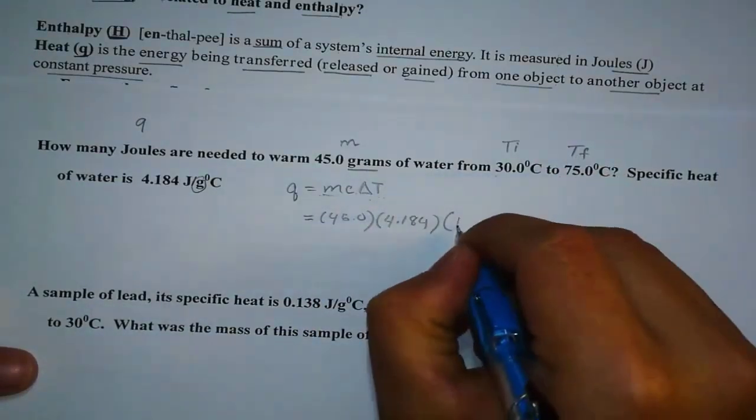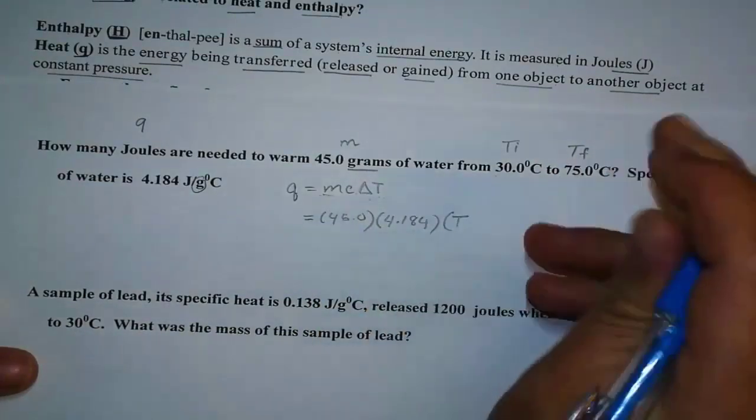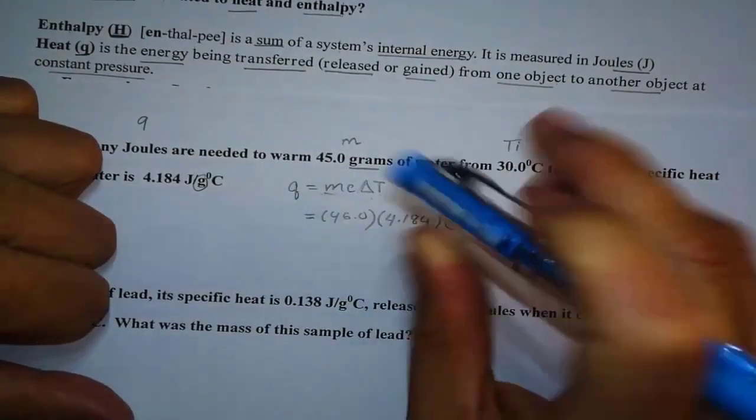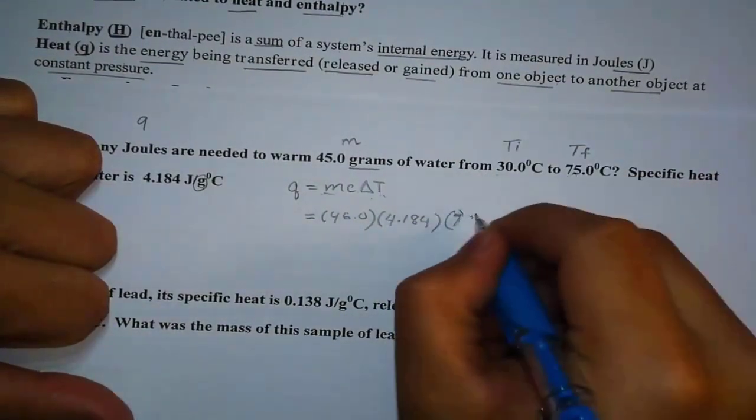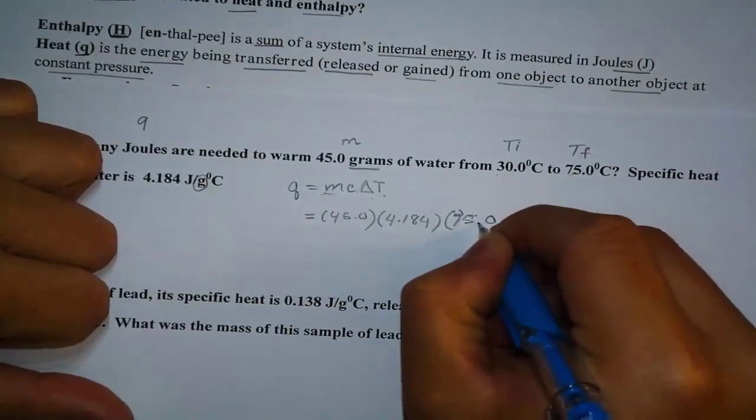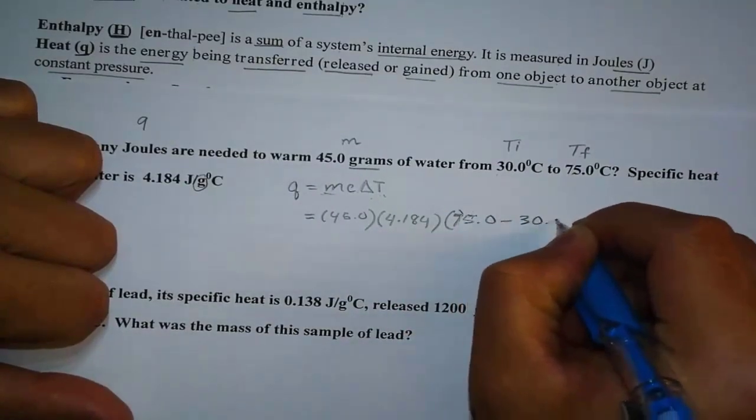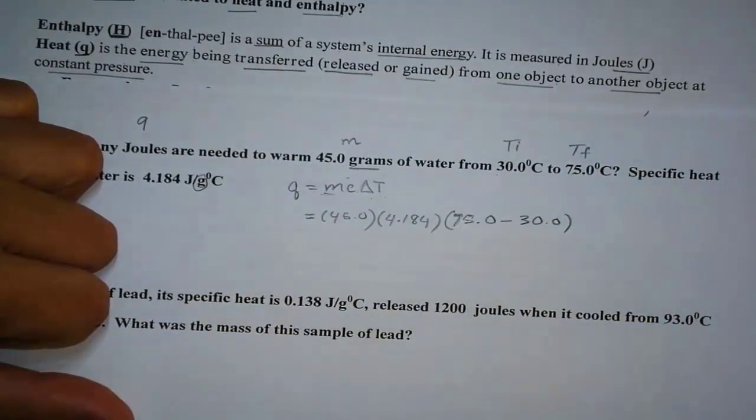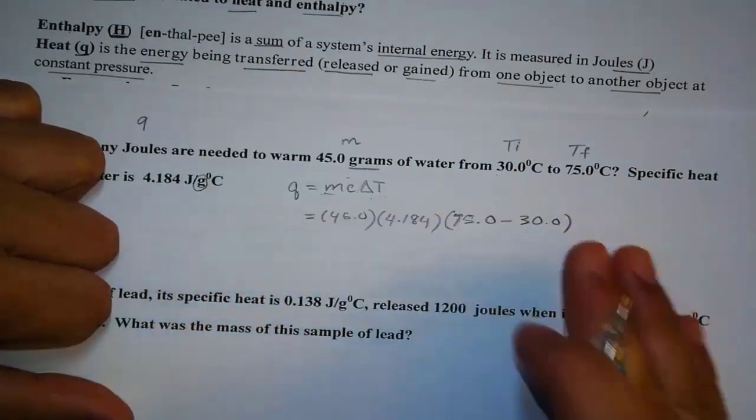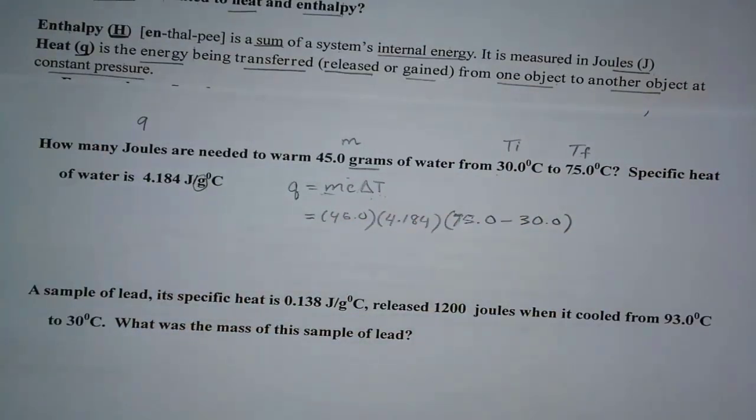...which is T final minus T initial. In this case, we know exactly what it is already. The T final is 75.0. And the T initial is 30.0. And then all we have to do is just plug this into the calculator. Isn't that easy?